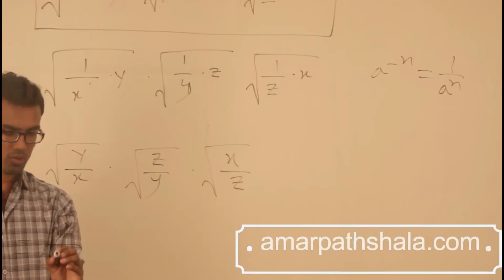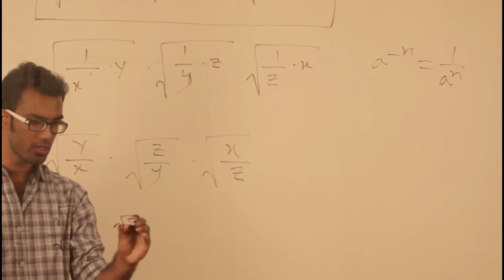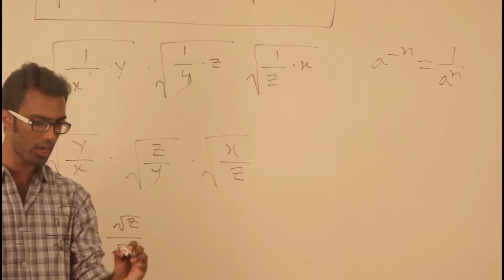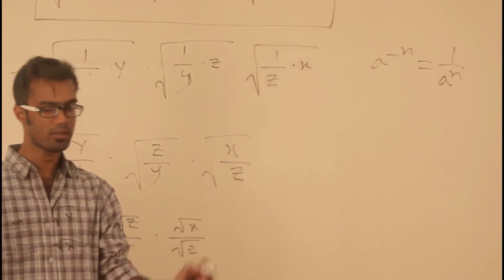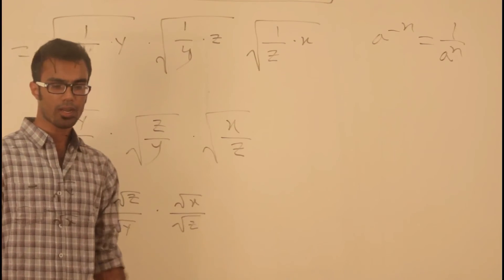Here in the numerator and denominator, we have these root over terms. If we cancel them out,